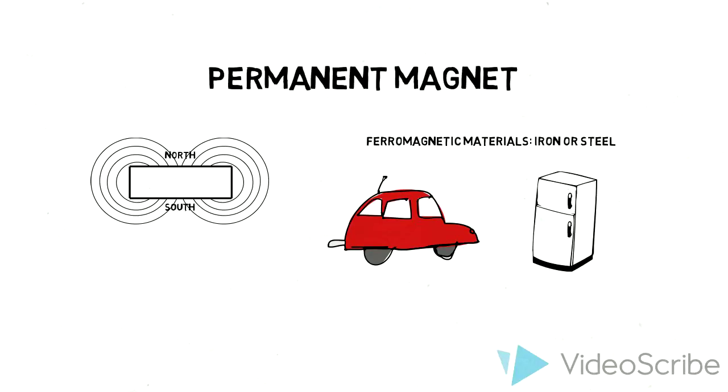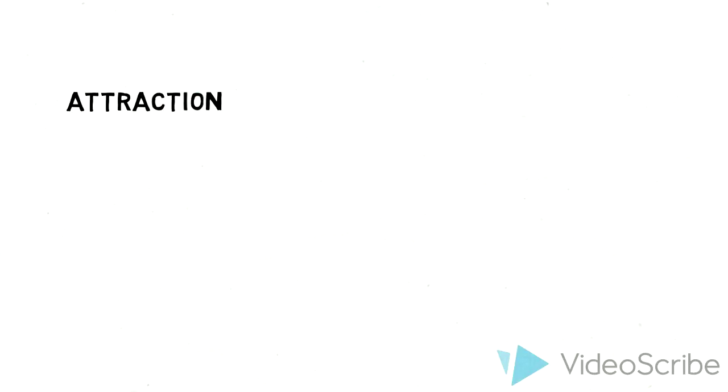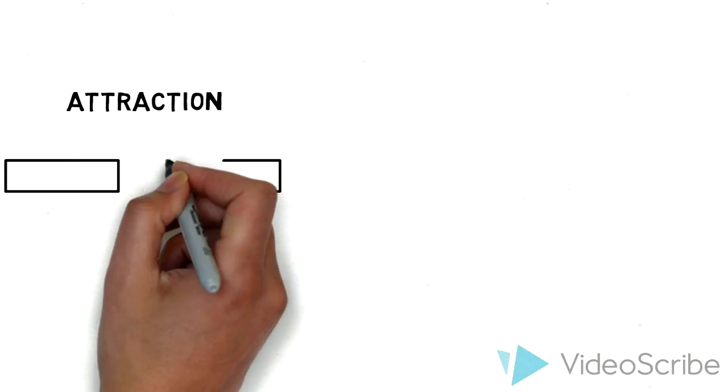Magnets won't stick to most other metal types, including aluminum or copper. Magnets will stick to any material that has iron in it, but what about another magnet? When will they attract and when will they repel?